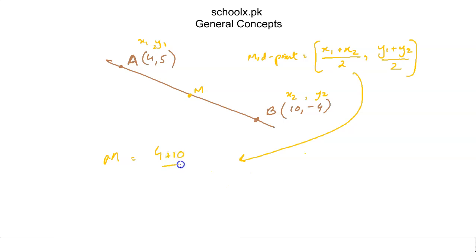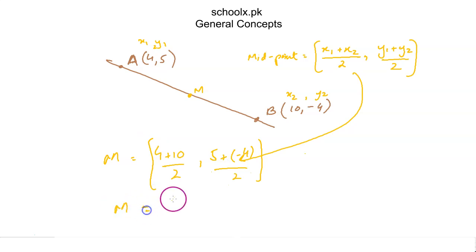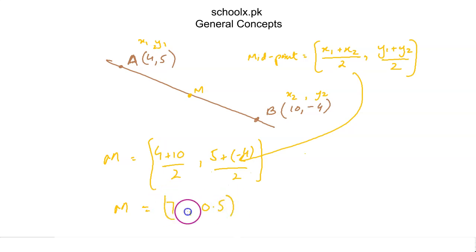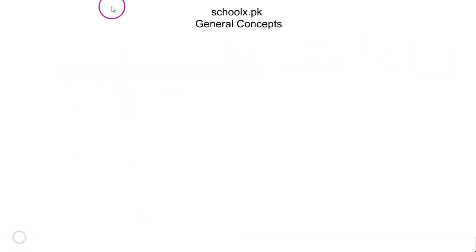So the coordinates of M are: (4 plus 10) over 2 for x, and (5 plus negative 4) over 2 for y. That gives us 14 over 2 equals 7, and 1 over 2 equals 0.5. So M is (7, 0.5) — those are the coordinates of the midpoint of A and B.